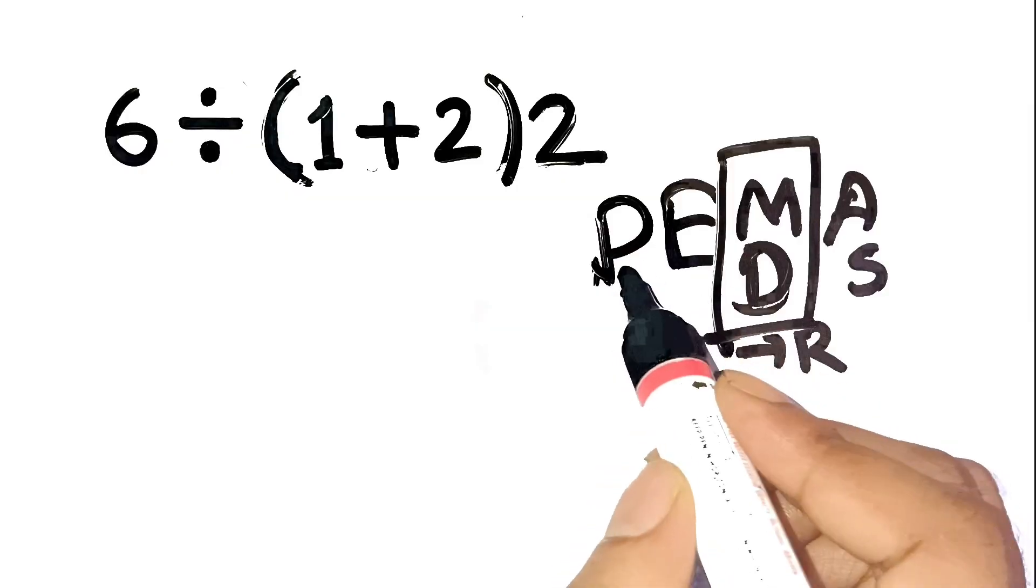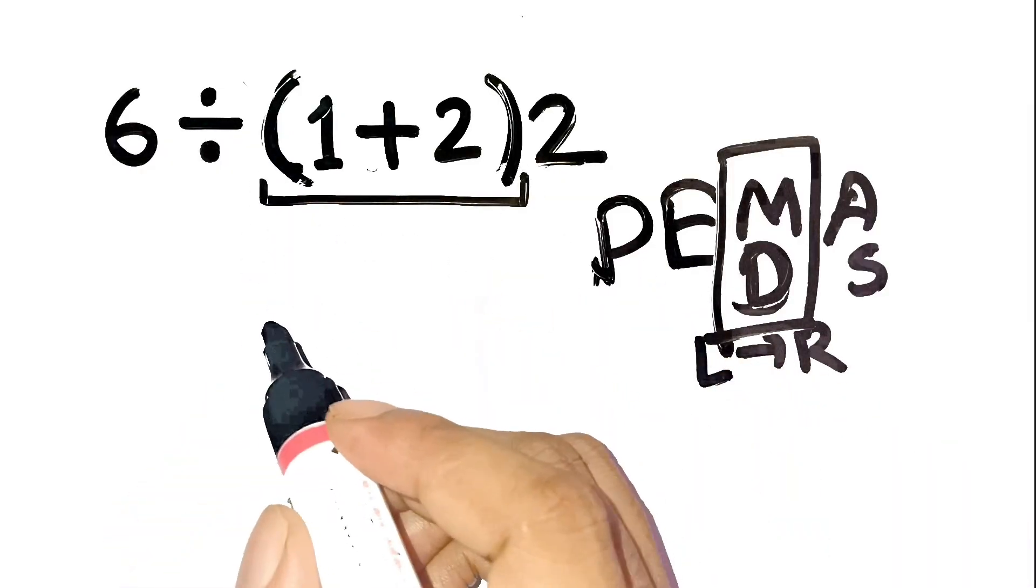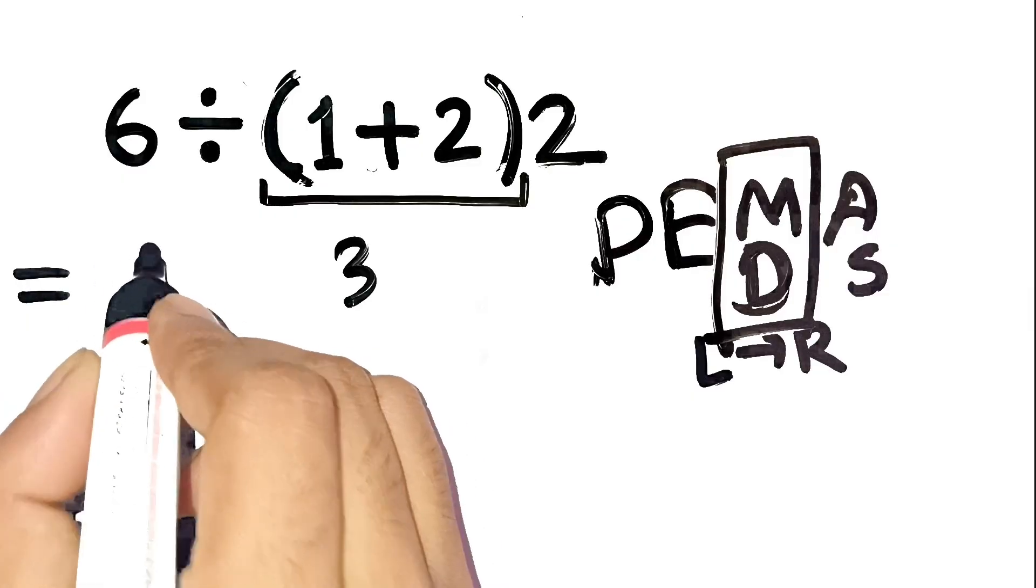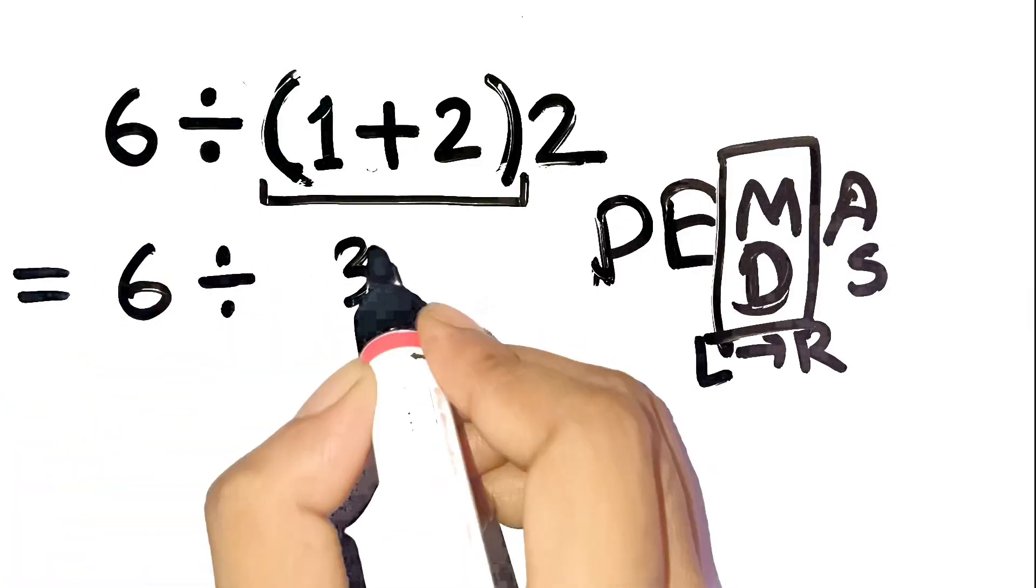Okay, step 1, solve inside the parentheses. 1 plus 2 equals 3. So now the expression is 6 divided by 3 times 2.